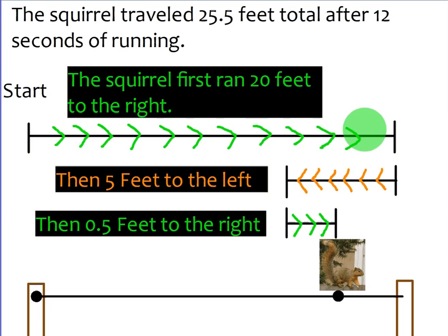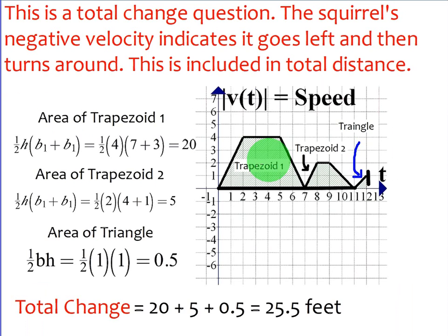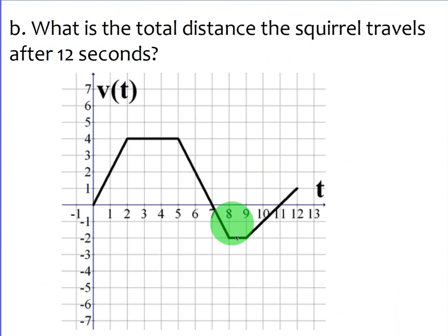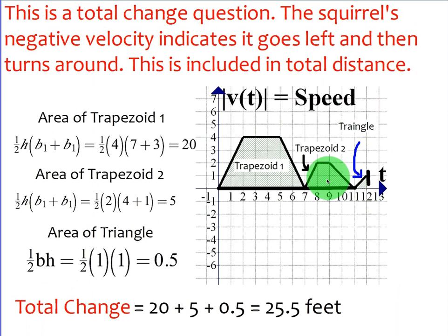Then next, what happened was, then 5 feet to the left, that's indicated by this area that was below the t-axis. Okay. But that's still distance, right? It's still running 5 feet. So it's this trapezoid right here.